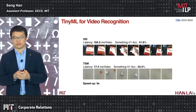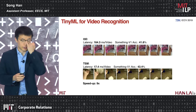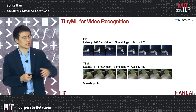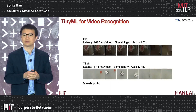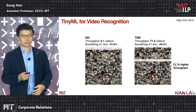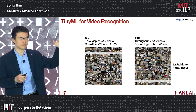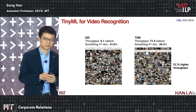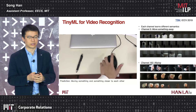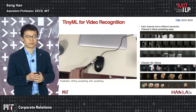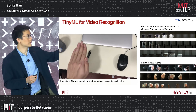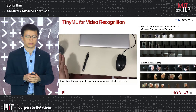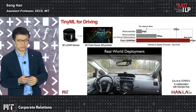For video recognition, we found a lot of temporal redundancy that can be greatly reduced. We propose the temporal shift module to eliminate temporal redundancy in video understanding, accelerating it from over 164 ms per video to only 17 ms — a 9x speedup — going from 6 videos per second to 77 videos per second on the same hardware. The approach also provides interpretability, highlighting the relevant spatial region and time frame corresponding to each action.